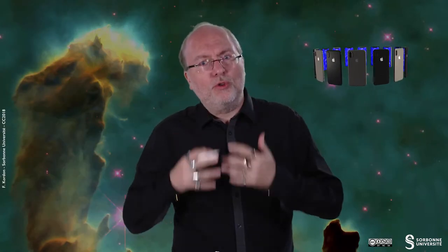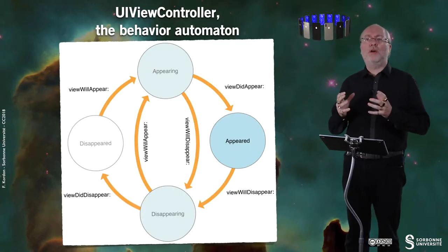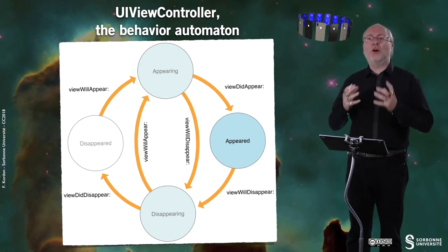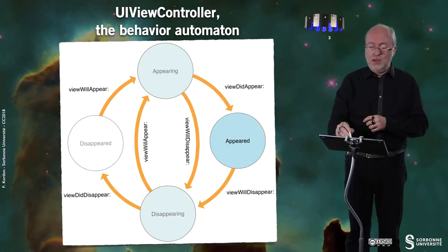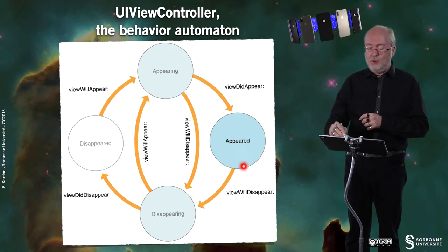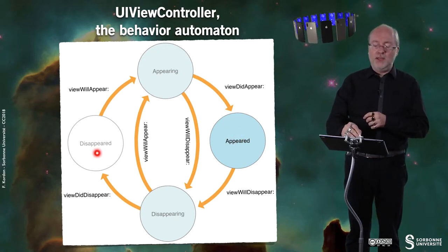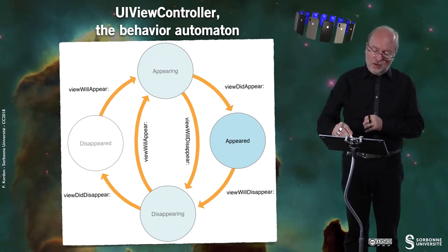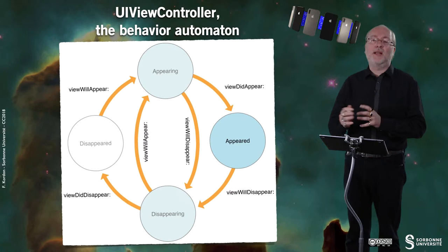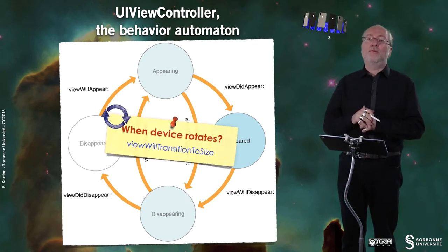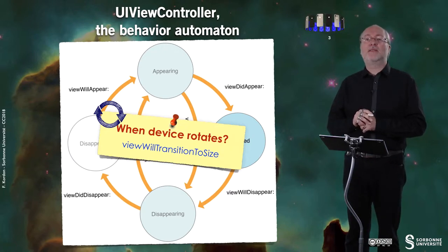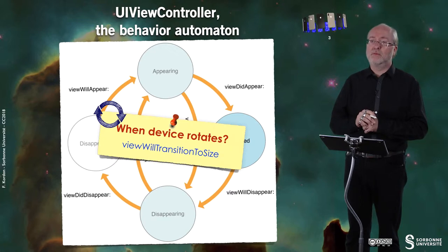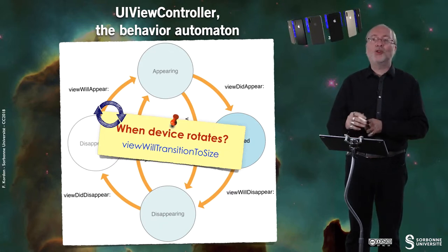Before going to this protocol, let's have a look at the behavior automaton of a UIViewController. As mentioned in a previous video, when the view appears you have viewDidAppear, then viewWillDisappear, then viewDidDisappear or viewWillAppear. But also there is another method when the device rotates: viewWillTransitionToSize. This is the way you will handle orientation, and you will see that it's much smarter.